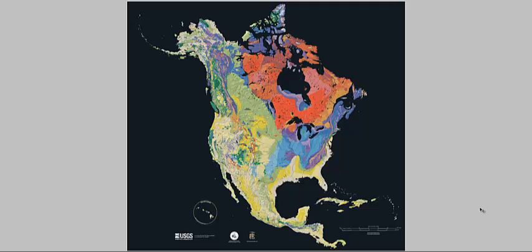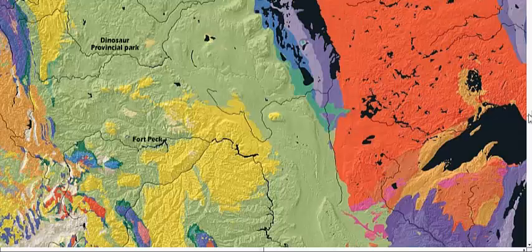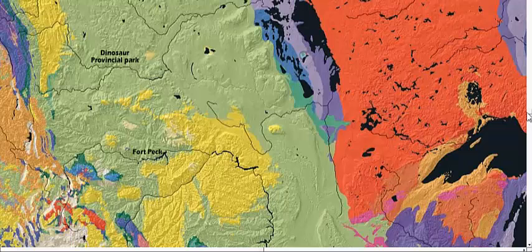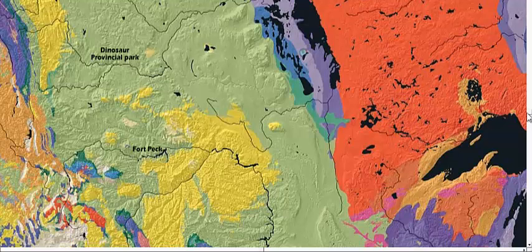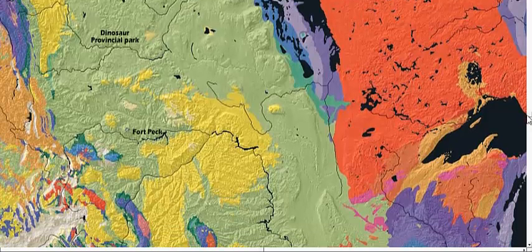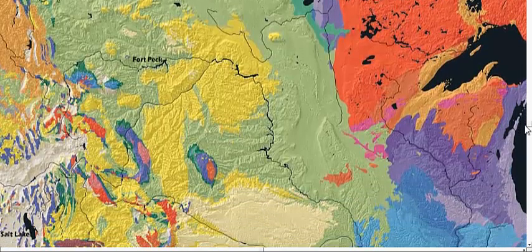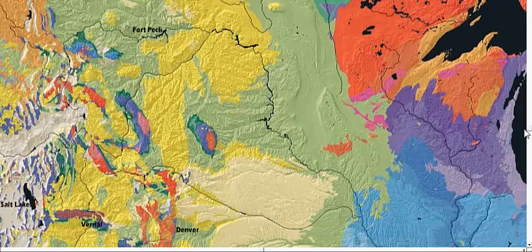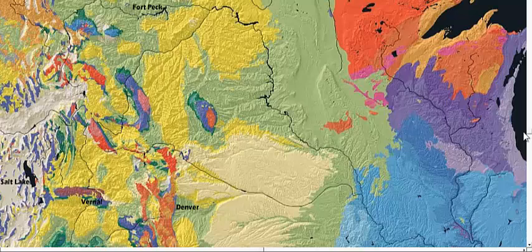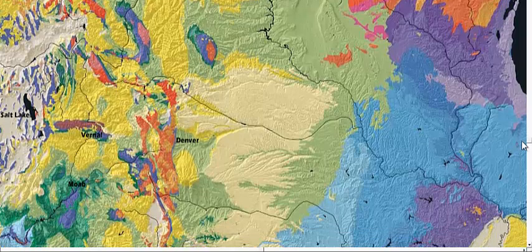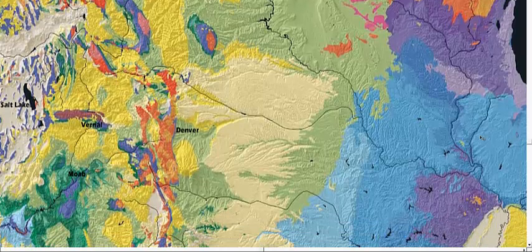We can see that Central Canada has the most green rocks in North America. This is centered around Dinosaur Provincial Park, located east of Calgary. As we head south, we see that green extends into Montana, near the large reservoir called Fort Peck, which is where Tyrannosaurus rex is found. The rugged Rocky Mountains have lots of pockets of green, especially in Wyoming, Colorado, and eastern Utah. There are even Mesozoic rocks out on the Great Plains.